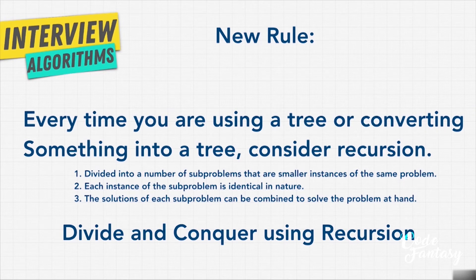And then finally, the third point is that those solutions — if you solve the smaller problems, the leaf nodes of that tree, and you combine them — that solves the problem above it. That is a recursive solution that you can use.